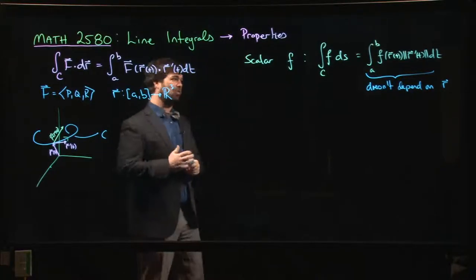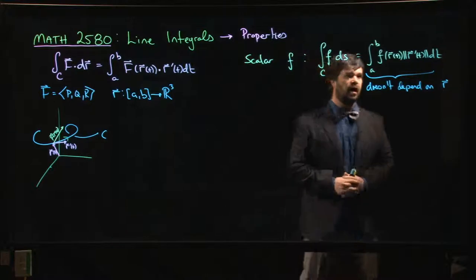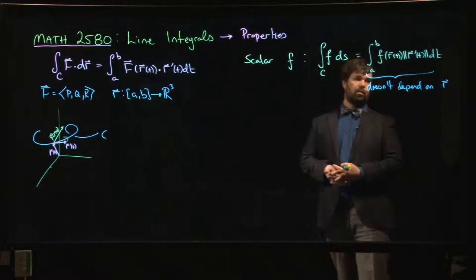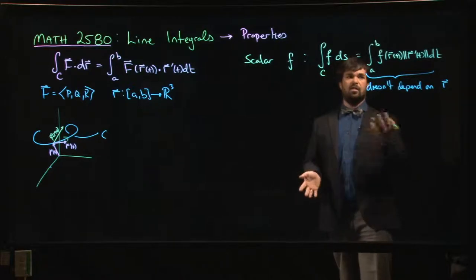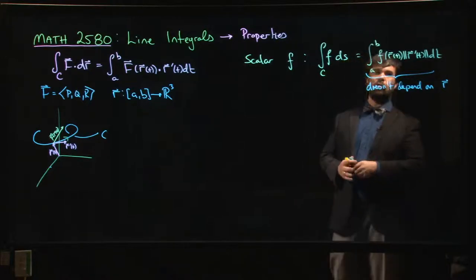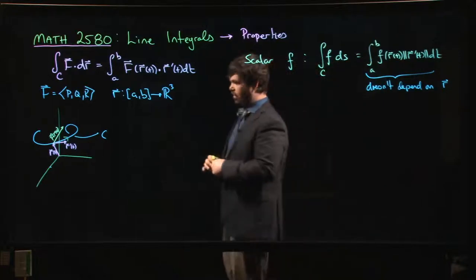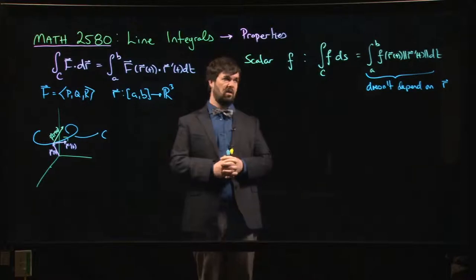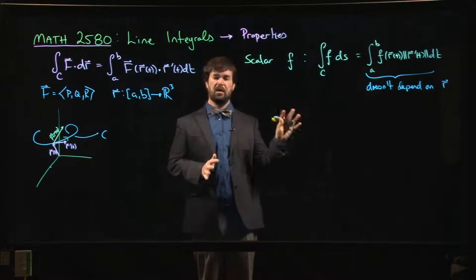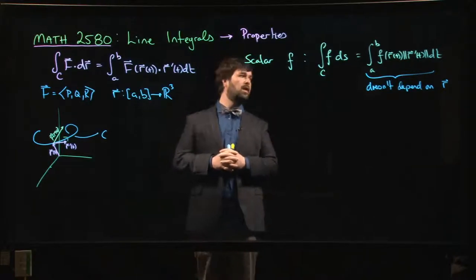Two people with two different parameterizations will get the same result for this integral. The proof — which we're not going to do — more or less amounts to a change of variables. If you have two different parameterizations they're related by some change of variables, and you do the usual substitution trick in your integral and find that you get the same result either way.